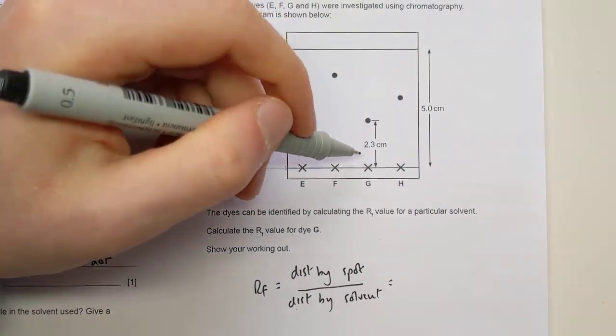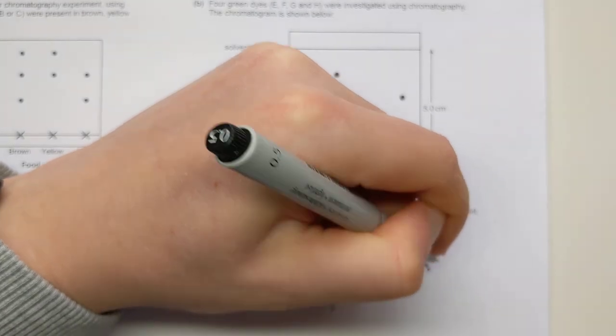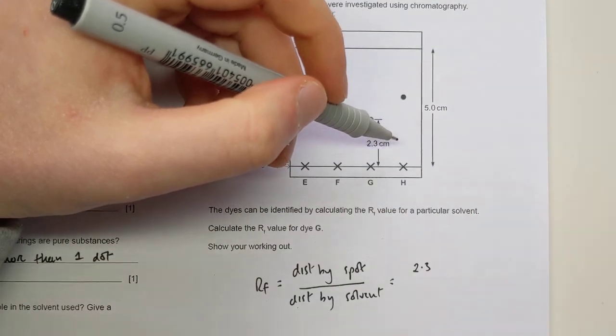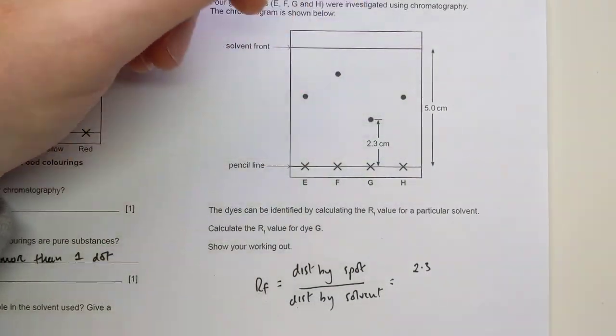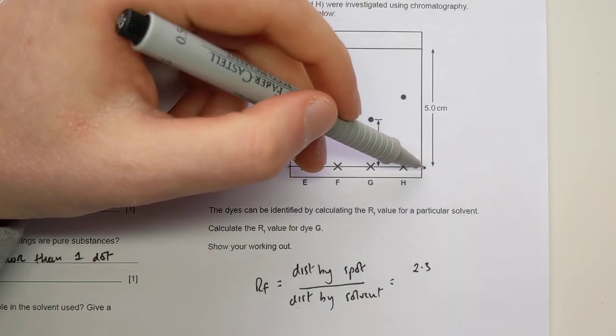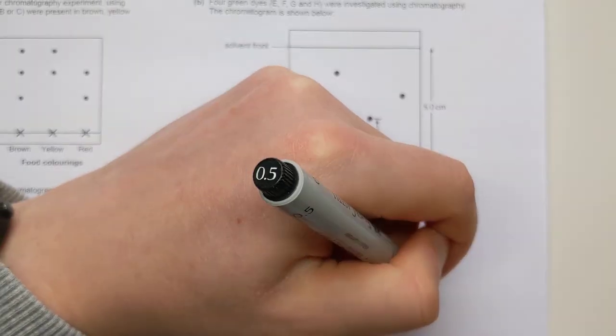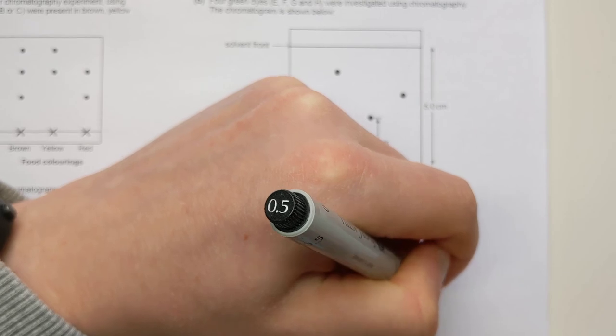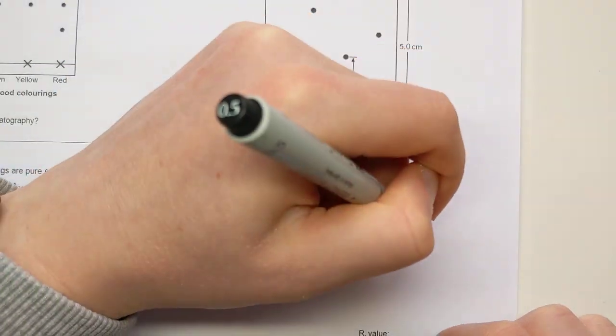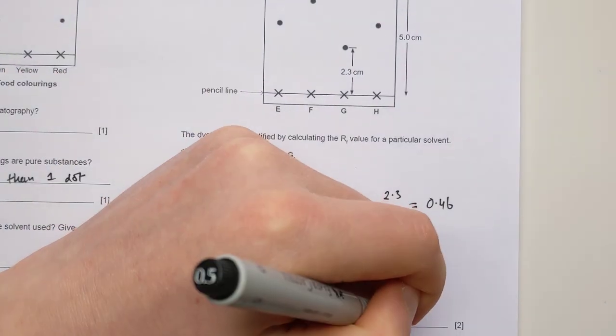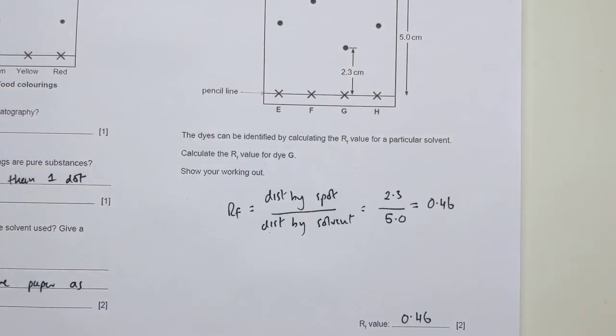RF is distance traveled by the spot divided by the distance traveled by the solvent. Distance traveled by the spot from the starting point is 2.3 centimeters. Distance traveled by the solvent is distance from the start to the solvent front, which is 5 centimeters exactly. Put in your calculator, you should end up with 0.46 and normally just give it to two decimal places. And that is your answer for two marks.